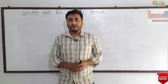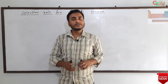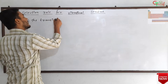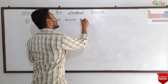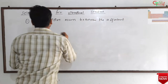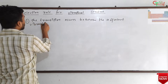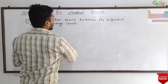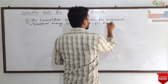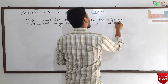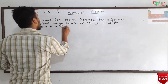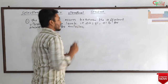Just like rotational spectra, there are two rules in vibrational spectra as well. The first rule is that the transition occurs between the adjacent vibrational energy levels — that means Δv must be equal to ±1. Plus one is for absorption of energy, and minus one is for emission of energy.